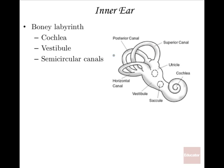The inner ear — the deepest part of how the ear works — is made up of a bony labyrinth, like a cavernous maze, hard all throughout. It's made of three basic parts: the cochlea, which is the classic snail shell-shaped part having to do with hearing; the vestibule, made up of the utricle and saccule; and the semicircular canals — three loops — all having to do with equilibrium. Your brain gets information from these areas to know how your head is moving in space.